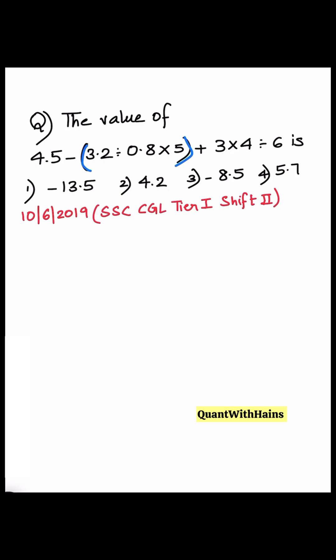Another BODMAS simplification. First we need to solve what is in the bracket: 4.5 minus 3.2 divided by 0.8 times 5, plus 3 times 4.